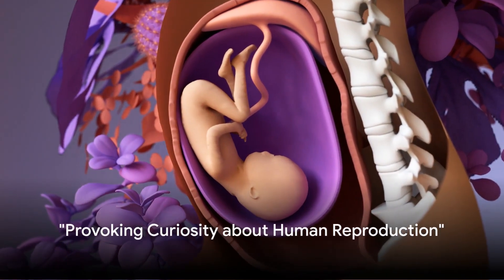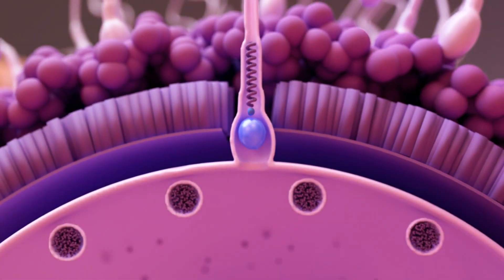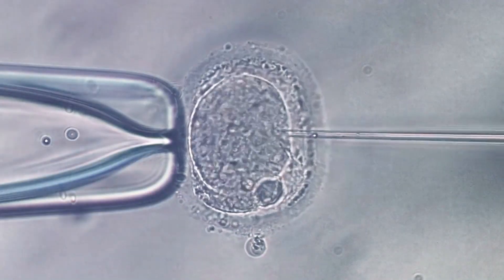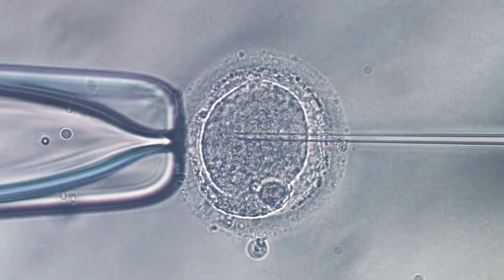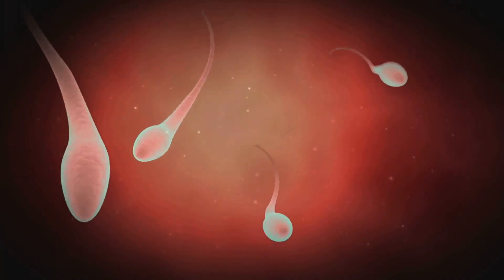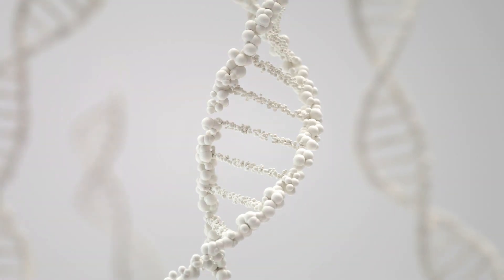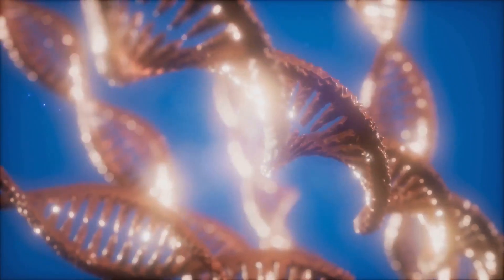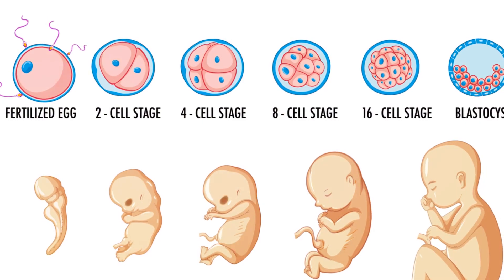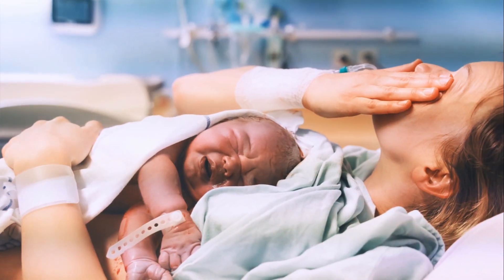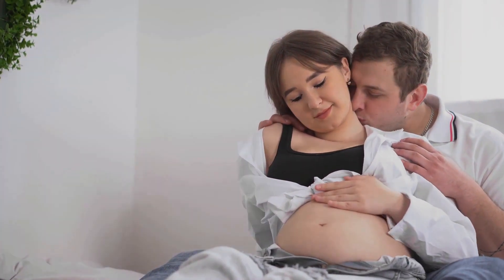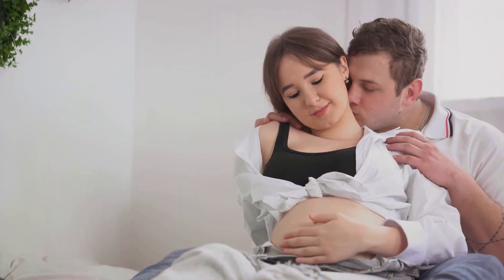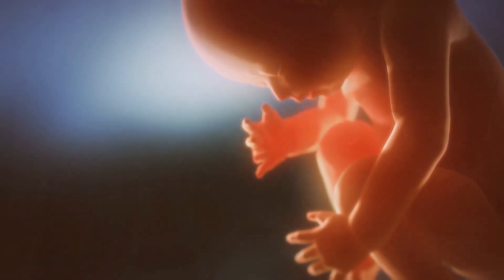Have you ever wondered how a single cell can develop into a complex human being? Today, we're diving into the fascinating world of human reproduction, a journey that begins with two microscopic cells and culminates in the miracle of life. We'll explore the roles of DNA and sex cells, the moment of conception, the growth of an embryo into a fetus, and finally the incredible process of birth. Get ready to unravel the remarkable journey of human life from a single cell to a fully grown human being.